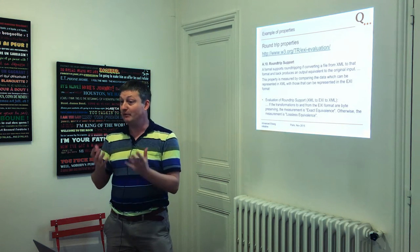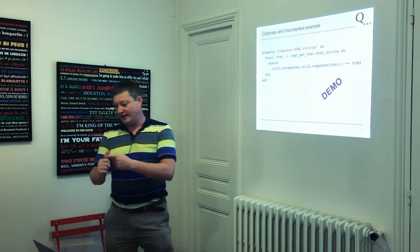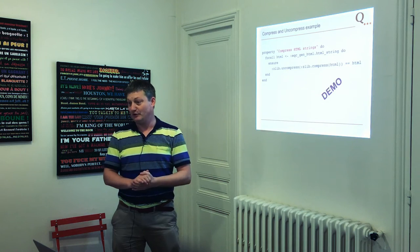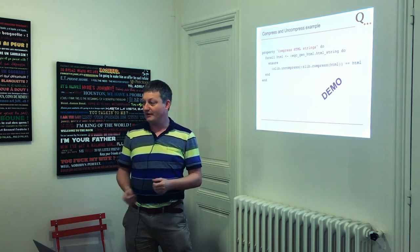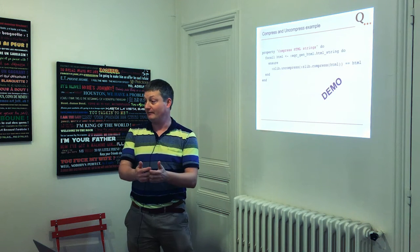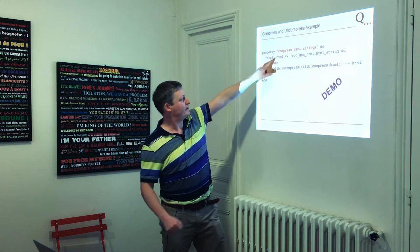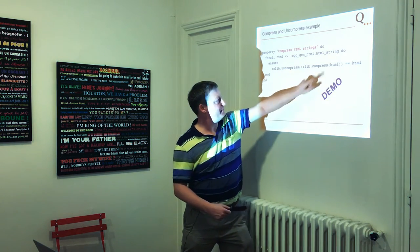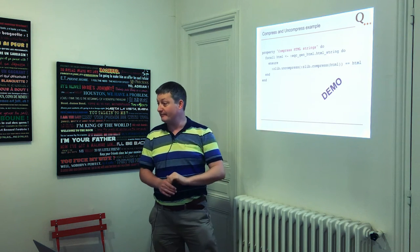In this standard there's something called a round trip property. It basically says: if you go from XML, compress it, and then go back to XML again, it would be extremely nice if that's the same XML you started with. That's a property — if you compress it and decompress it, you should get the same result. I don't have an EXI algorithm in my pocket, so I use a zlib library instead, and an HTML generator to generate random HTML pages.